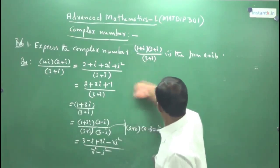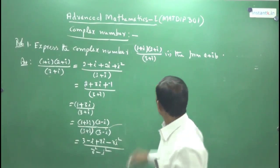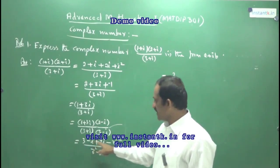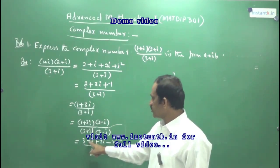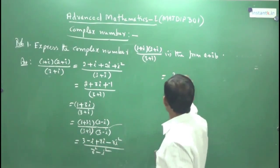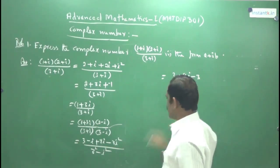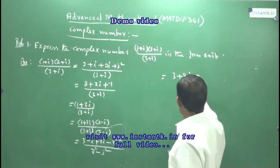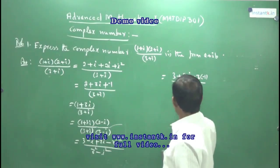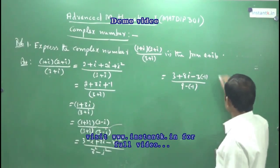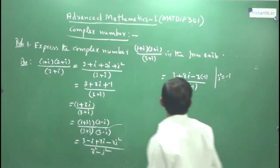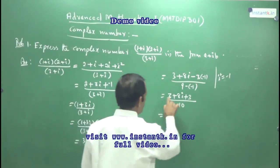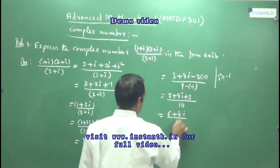Further simplify. The numerator: 3 is there. Then −i + 9i — that is −1i + 9i = 8i. Then −3i²: since i² = −1, minus of minus gives +3. So the numerator is 3 + 8i + 3 = 6 + 8i. The denominator: 9 − i² = 9 − (−1) = 10. So you get (6 + 8i) divided by 10.